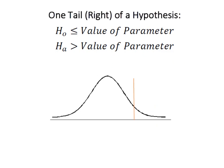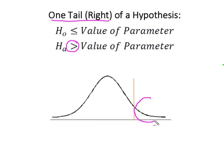The mathematical opposite of 'less than or equal to' is 'greater than.' We look at the sign in our alternative hypothesis, which in this case is 'greater than,' which means we have a one-tailed right test — our rejection region is in the upper tail of the curve.